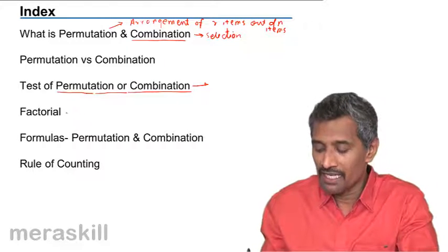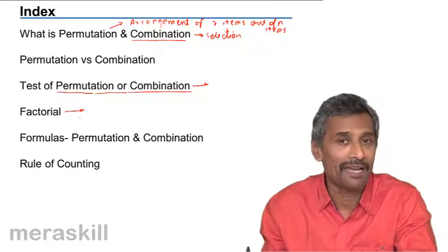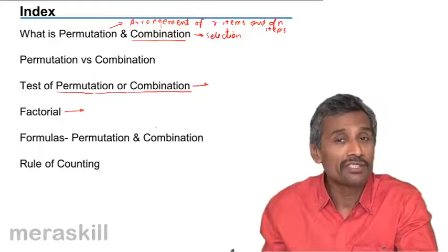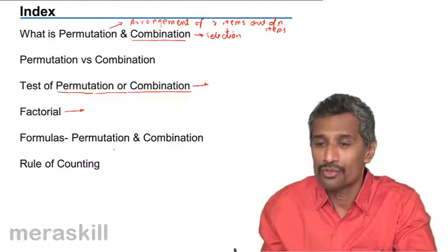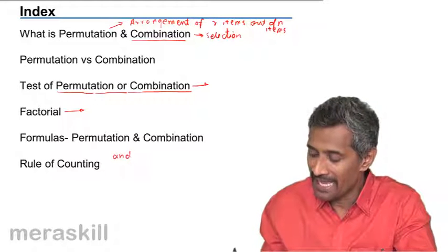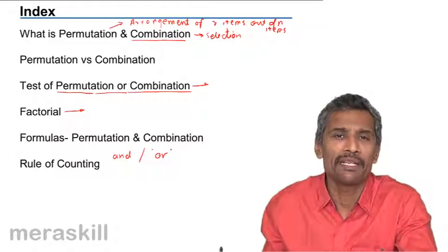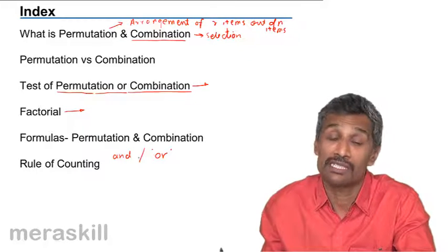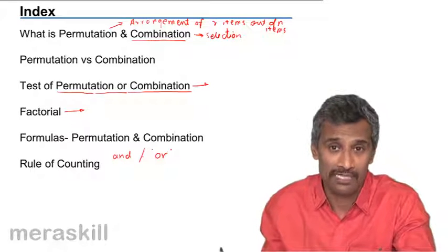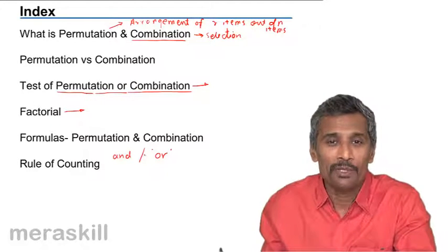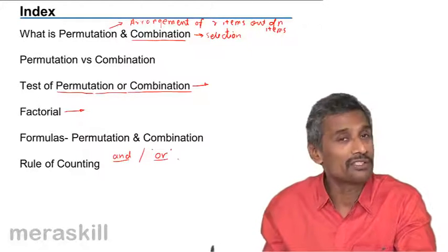Then we'll understand the concept of factorial - what factorial means. In fact, we'll be starting with factorial concepts. Then, the formulas of permutation and combination with various types of possibilities. And then the rule of counting, which means you should understand the difference between 'and' versus 'or'. 'Or' means you have either one possibility or the other. 'And' means when two things occur simultaneously. What is the mathematical binary operation which could be used when you have an 'and' situation versus an 'or' situation?